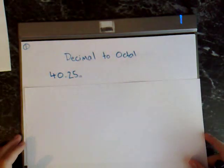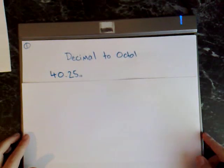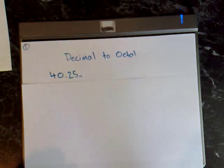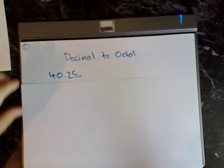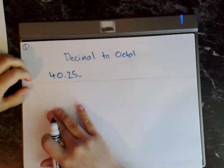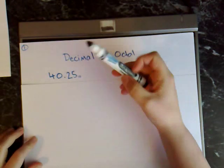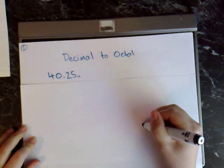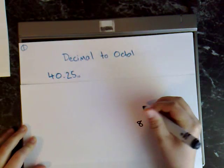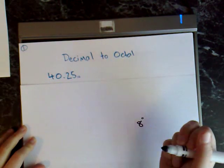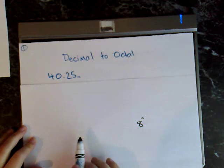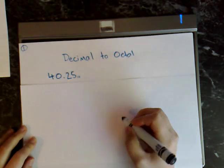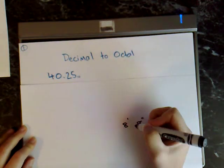To start off with I'm going from decimal to octal and the number I'm using is 40.25. The first step is to use powers of 8, because we're going to octal. You want to keep going up until the last power is higher than the number you want to convert — so 8 to the power of 0, 8 to the power of 1, 8 to the power of 2.